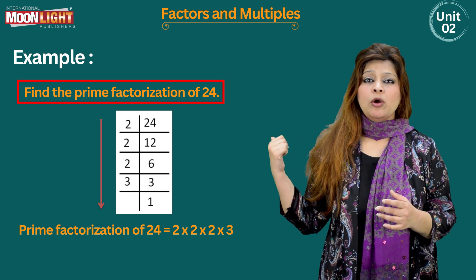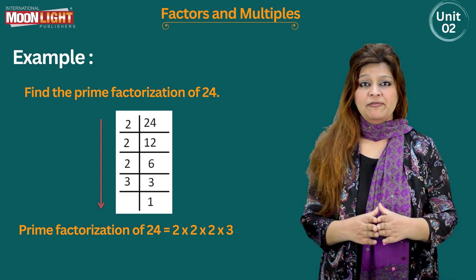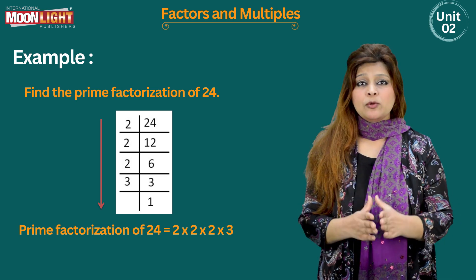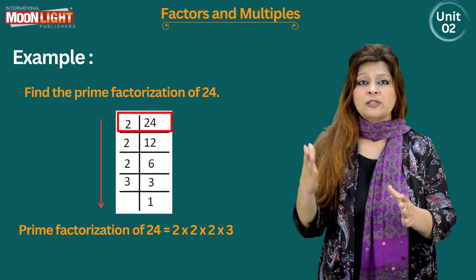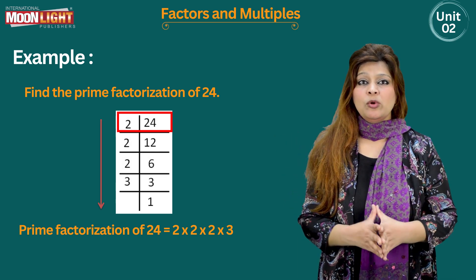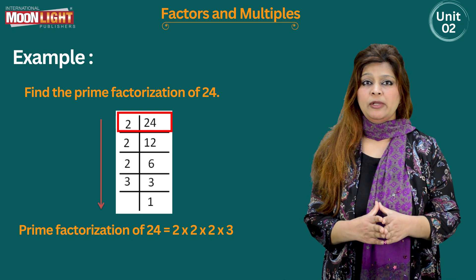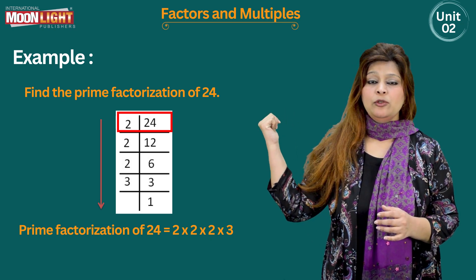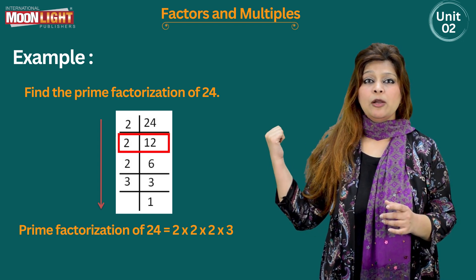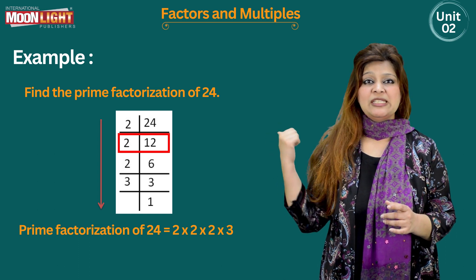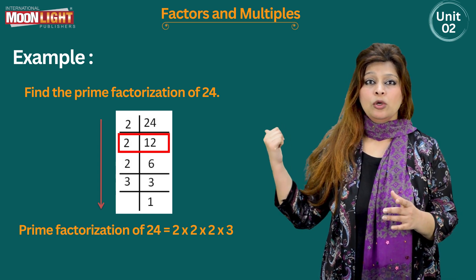Let's solve an example: find the prime factorization of the number 24. We divide 24 by its smallest prime factor, which is 2. Two ones are two and two twos are four, so below 24 we get 12. Again we divide 12 by 2, the smallest prime factor, and two sixes are twelve, so we get 6.